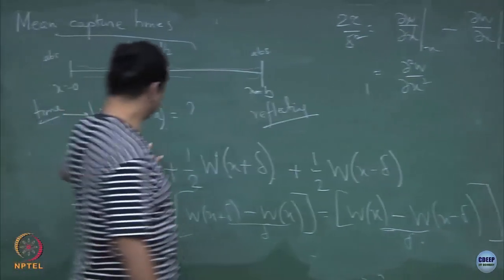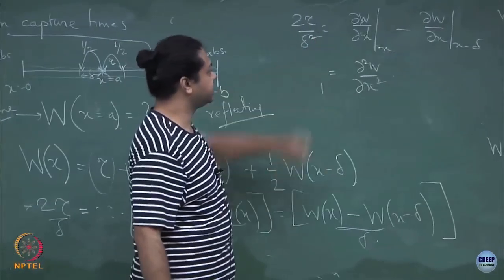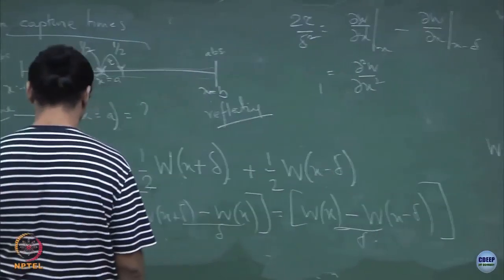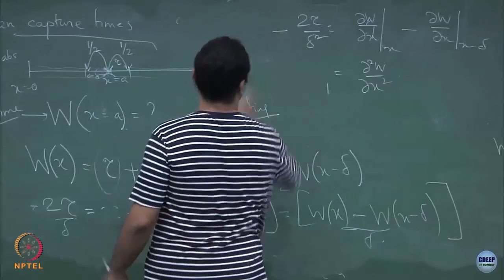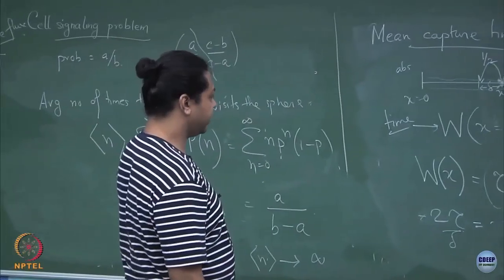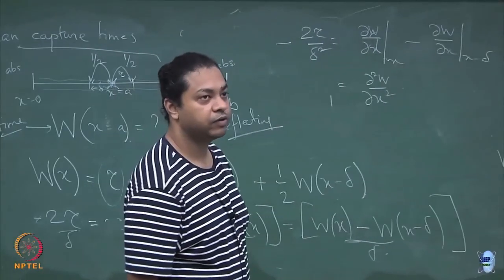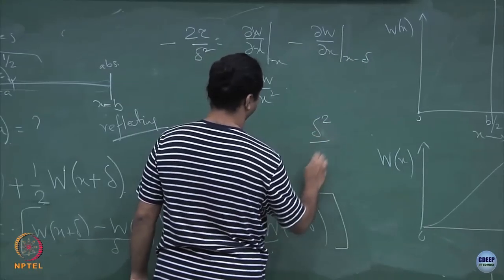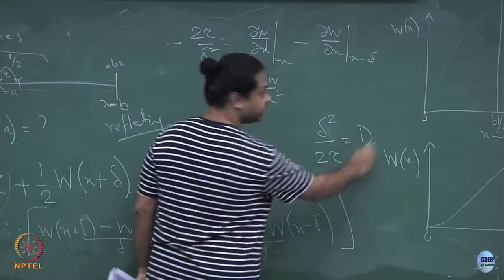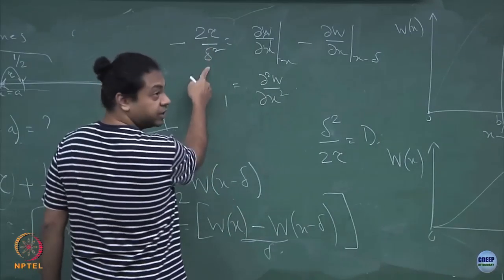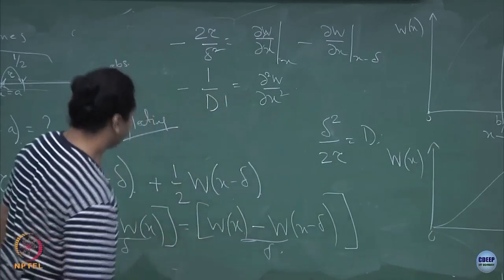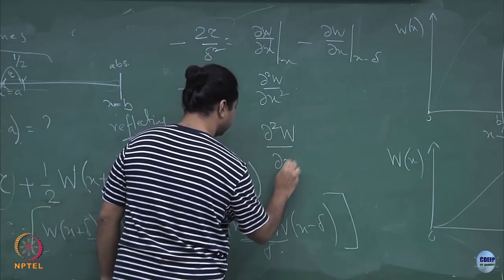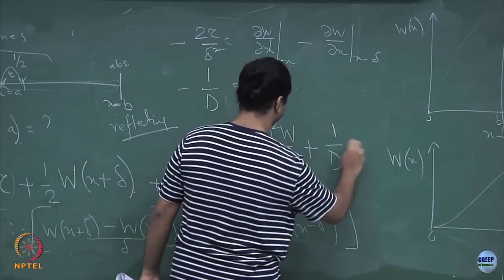Everything is the same as for the capture probability except for the manipulation with these times. Once you put in the factors of delta correctly, you get 2 tau by delta squared on the right. What is 2 tau by delta squared? That has units of 1 over the diffusion coefficient D. So the equation becomes d²w/dx² minus 1/D equals 0, or equivalently d²w/dx² plus 1/D equals 0. This is the equation for the mean first passage time.